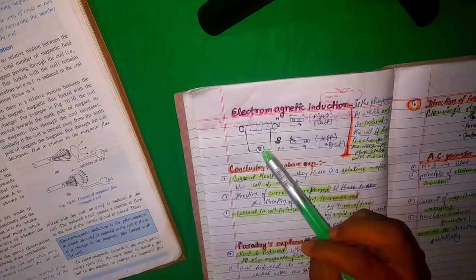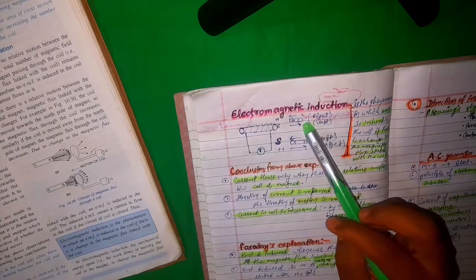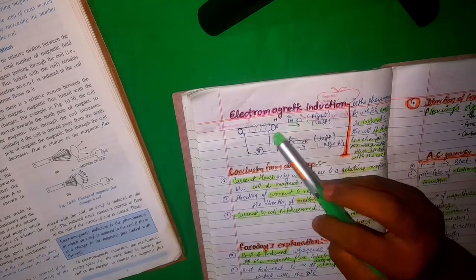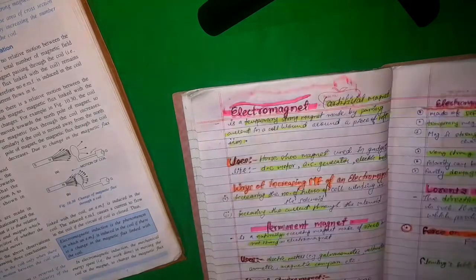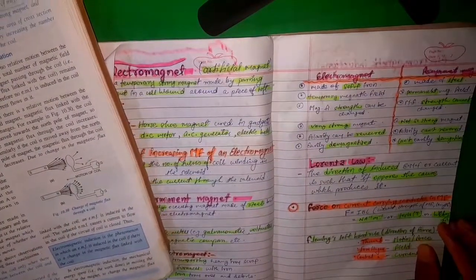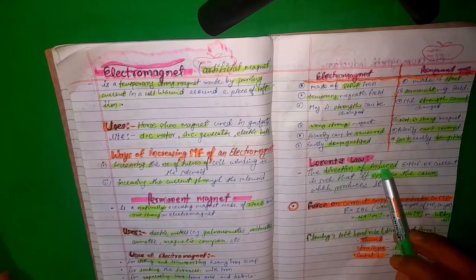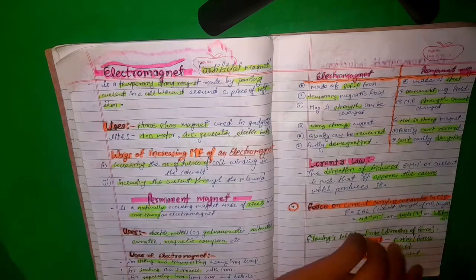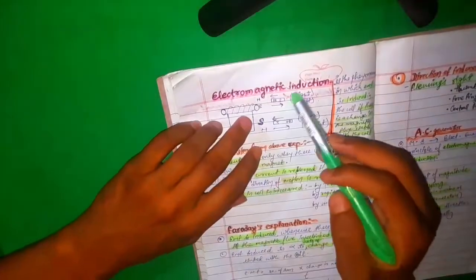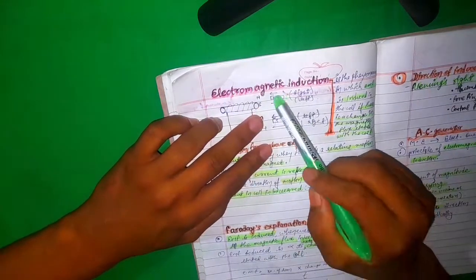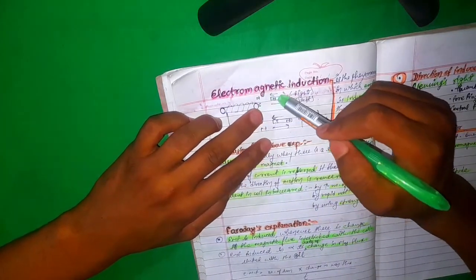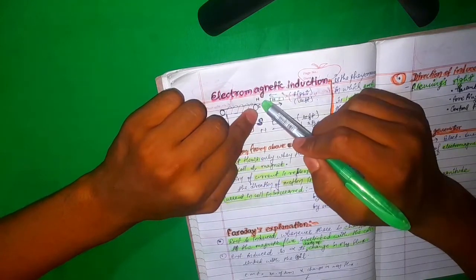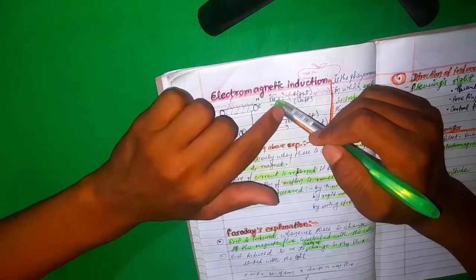In our experiment, a solenoid is taken, a galvanometer is placed in the circuit, and a magnet is moved towards the solenoid. According to Lenz's law, the direction of the induced EMF opposes the cause. When the magnet moves towards the solenoid with its south pole facing it, the induced end of the solenoid must repel it — so the solenoid's facing end becomes a south pole.